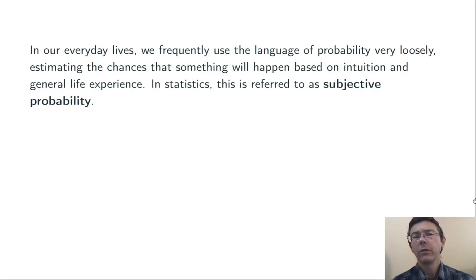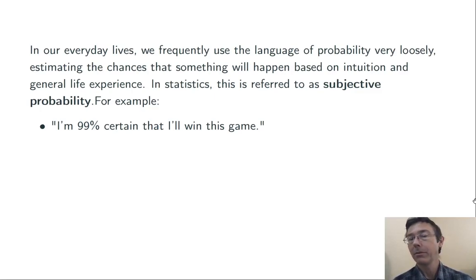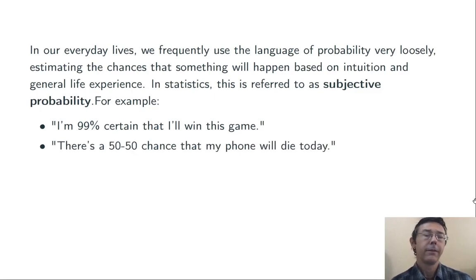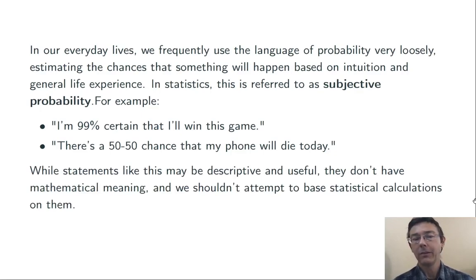In our everyday lives, we frequently use the language of probability very loosely, just estimating the chances that something will happen based on intuition and general life experience. In statistics, we call that subjective probability. For instance, I might say, I'm 99% certain that I'll win this game. Or, there's a 50-50 chance that my phone will die today. While statements like this are descriptive and useful in our regular lives, they don't have mathematical meaning, and we don't want to base statistical calculations on them. This sort of subjective probability is not really the subject of statistics, the study of statistics.